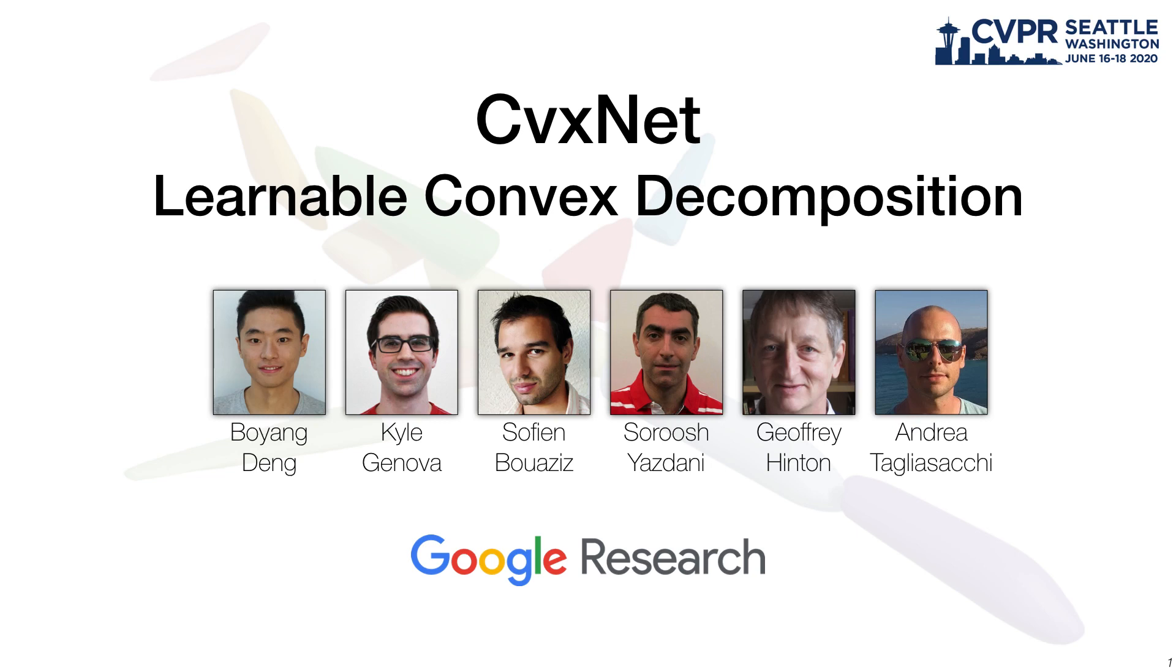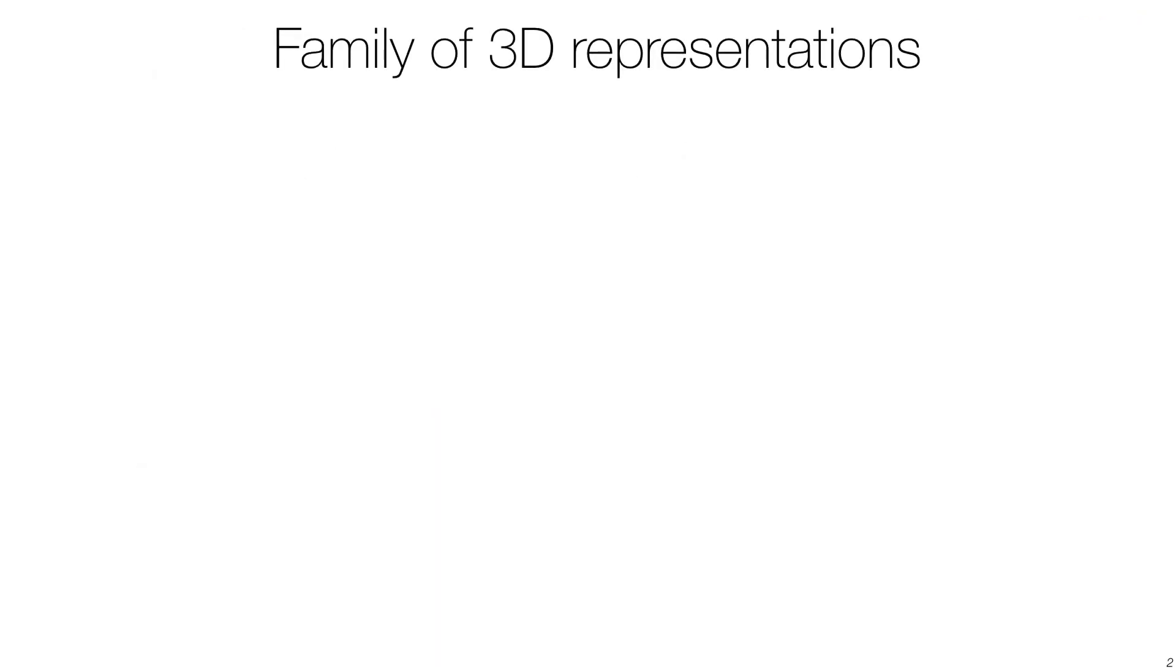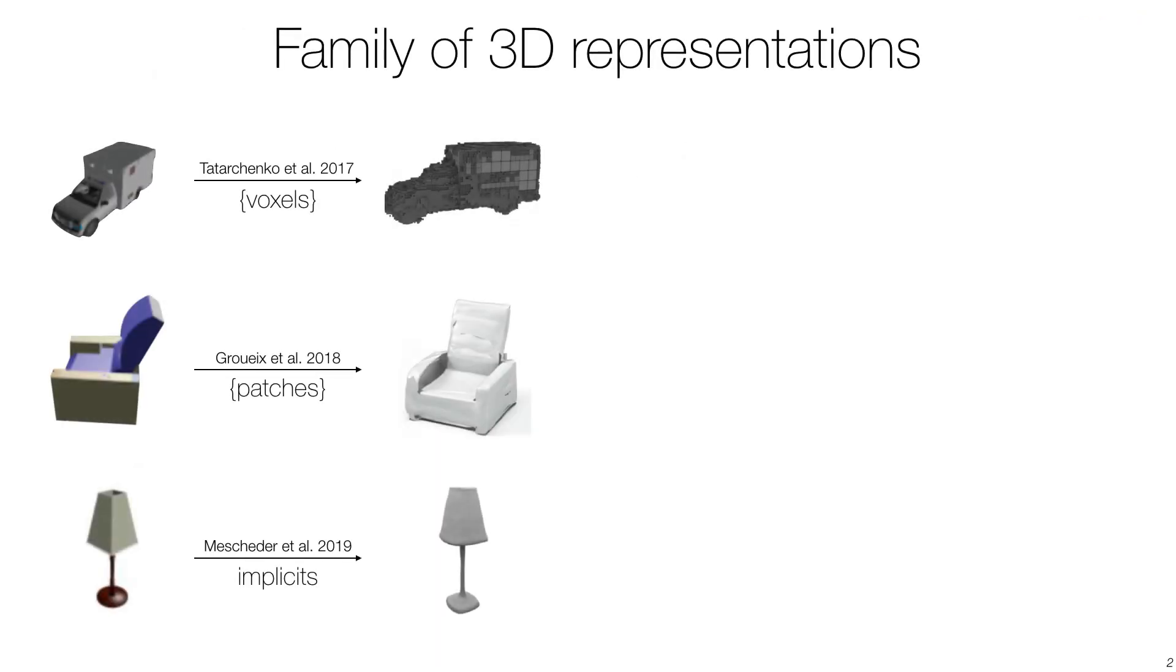We present ConvexNet, a differentiable decoder of 3D polygonal meshes based on convex decomposition. There are a variety of 3D shape representations that can be used in deep learning, including voxel grids, surface patches, and implicits.